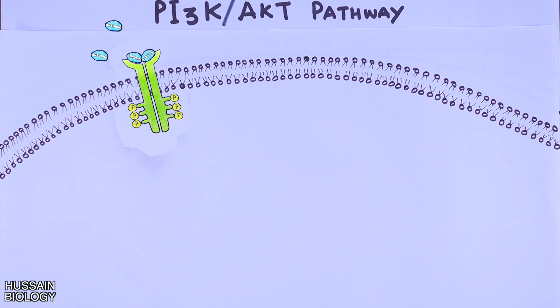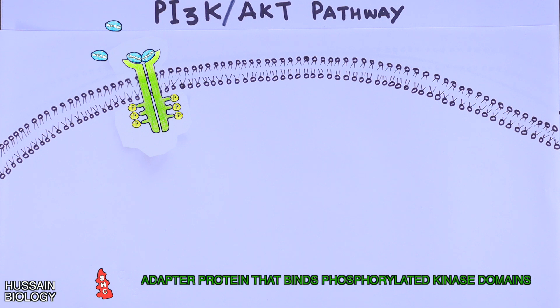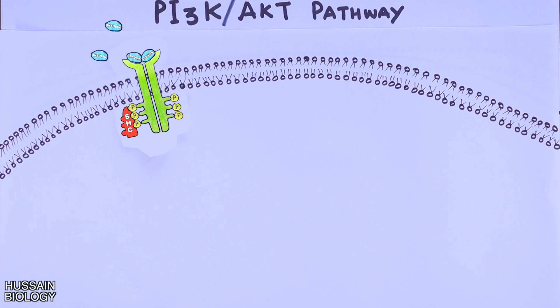From here the downstream signaling starts. First we see we have the SHC protein. This protein binds with the phosphorylated tyrosine kinase domains and itself gets phosphorylated. Then there is GRB2 protein. If we see the structure of it, it has got SH2 domain and SH3 domain. The SH2 domain of GRB2 binds with the receptor tyrosine kinase, whereas its SH3 domain is still unoccupied.